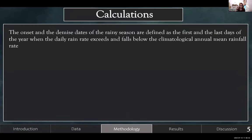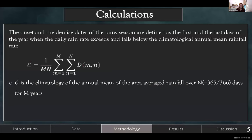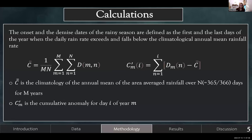The onset and demise dates of the rainy season are defined as the first and last days of the year when the rainfall rate exceeds and falls below the climatological annual mean rainfall rate. Mathematically, the climatology is the annual mean of the area-average rainfall for M years. The cumulative anomaly is the difference of a given day's rain from the climatology, and then you sum up all of these anomalies.